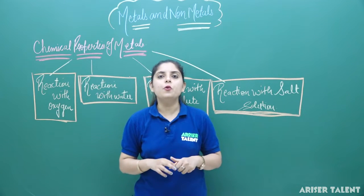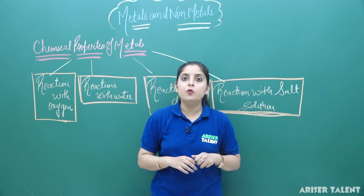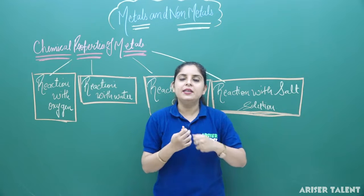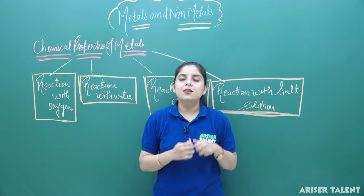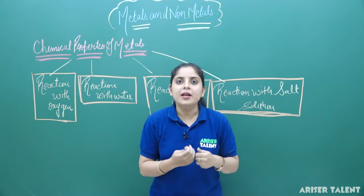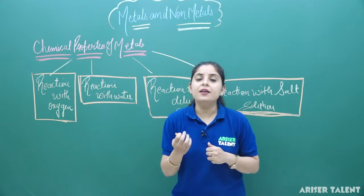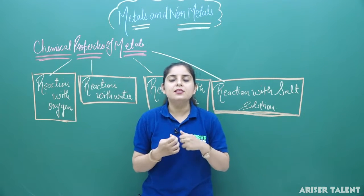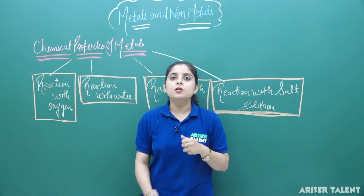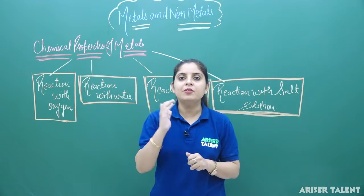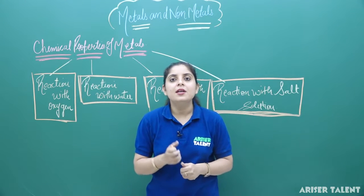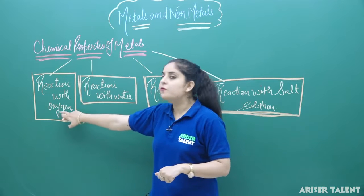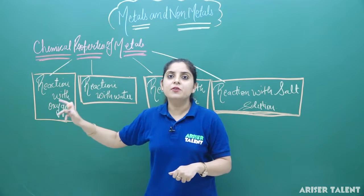Metals are going to react with oxygen and they form metallic oxide. But different metals have different tendencies to react with oxygen. Some will react at room temperature, some will need air, some will need prolonged heating, and some will need very strong heating. So all metals do not react equally with oxygen at room temperature — they require different conditions for forming their oxides.